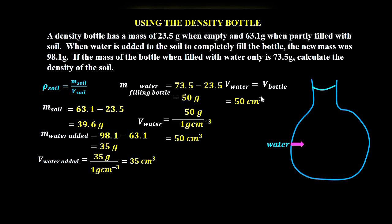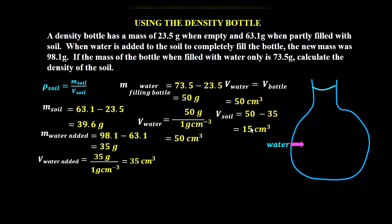Having determined the volume of the density bottle, we can now find the volume of soil. Taking the volume of the density bottle minus the volume of water added to the soil gives us the volume of soil. Volume of soil equals 50 minus 35, which gives 15 cubic centimeters.